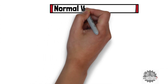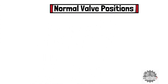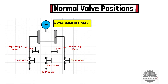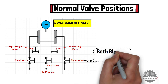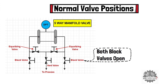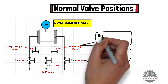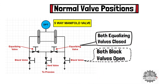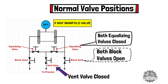First of all, let's learn what the normal valve positions of a 5-way manifold valve are when the differential pressure transmitter is in service. When the differential pressure transmitter is in service, both block valves will remain open, both equalizing valves will remain closed, and the vent valve will also remain closed.